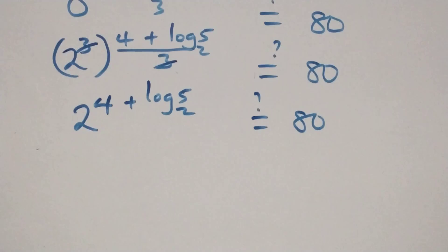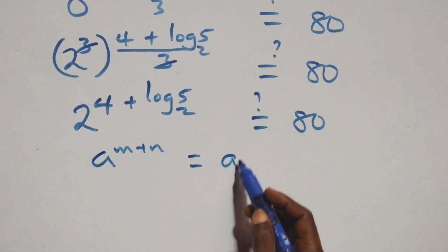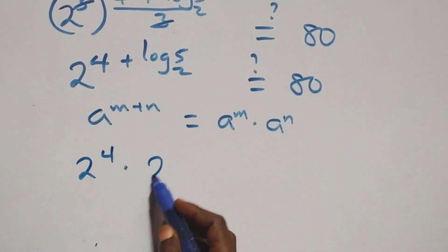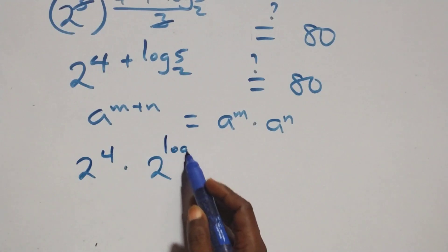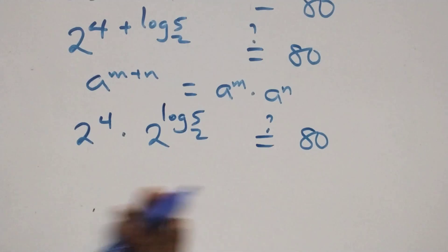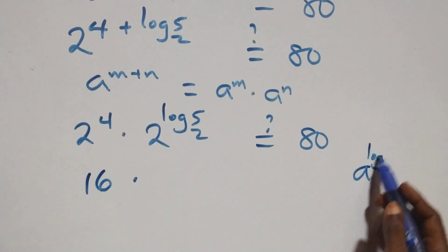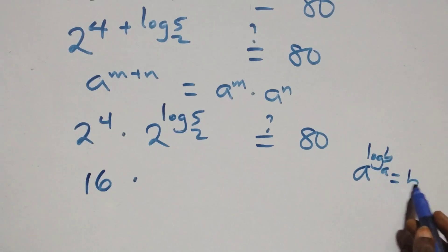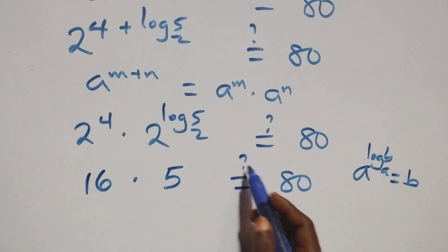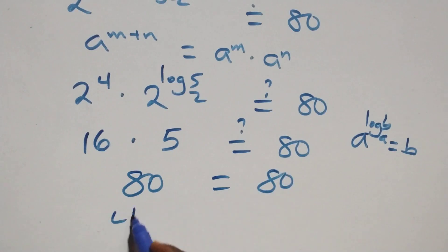This follows: a raised to power m plus n is the same as a raised to power m times a raised to power n. So this becomes 2 raised to power 4 times 2 raised to power log base 2 of 5, equals 80. Now 2 to the power 4 is 16, and a raised to power log base a of b equals b, so 2 raised to log base 2 of 5 equals 5. Therefore 16 times 5 equals 80.